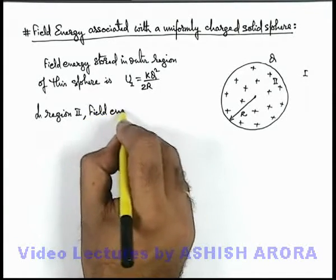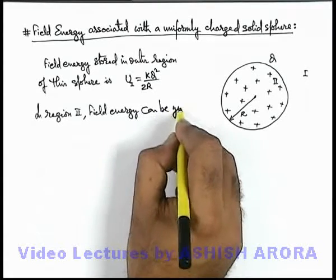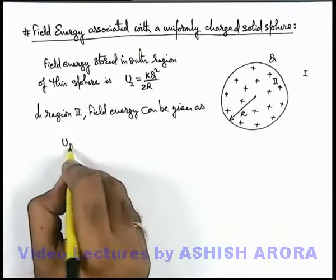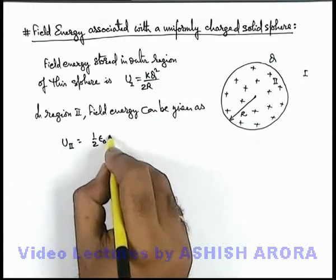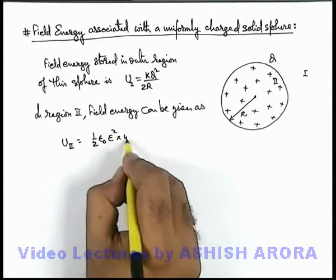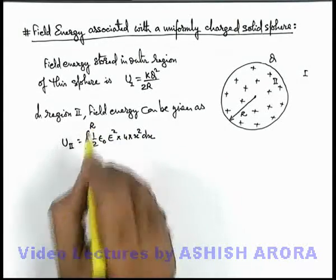can be given as, this field energy in the region 2 we can write as ½ε₀E² multiplied by 4πx²dx, which is integrated from zero to R.